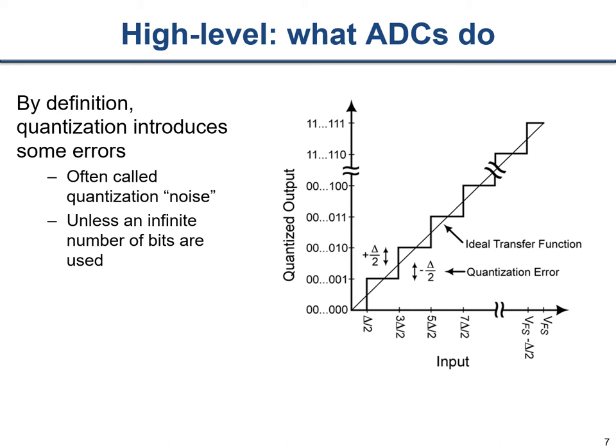Doing this process will inevitably introduce errors. We have a signal with an immeasurable spectrum of possible analog values, and we convert it into a signal with only discrete possible values that exist only at discrete instances in time. This introduces error, which we typically refer to as quantization noise. It's not strictly a stochastic process - if you know precisely what your input signal is and where your quantization levels are, it's deterministic. But for most purposes it basically looks like noise.